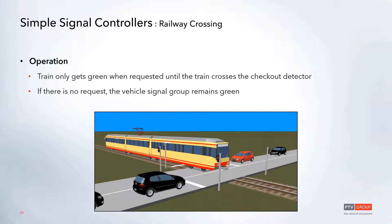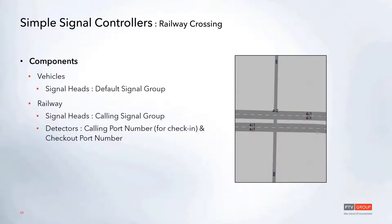For the railway crossing, the train only gets green once it's been requested when crossing the calling detector, and it will stay green until the end of the train has passed through the checkout detector. If there is no request, the default signal group remains green and vehicles travel normally. For setup, vehicle signal heads use the default signal group number; the railway has a check-in detector with the calling port number, a checkout detector with the checkout port number, and a signal head assigned to the calling signal group.